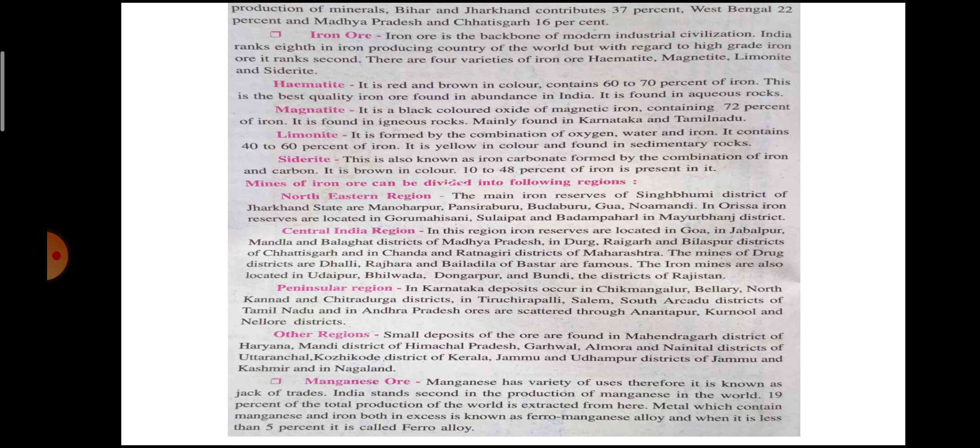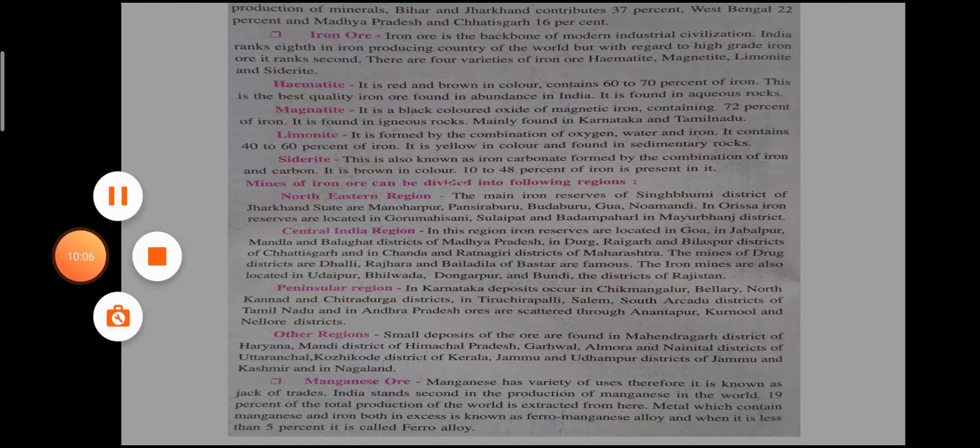In terms of mineral production by state, Jharkhand contributes 37% of minerals production. West Bengal contributes 22%, and Madhya Pradesh contributes 36% of minerals production.